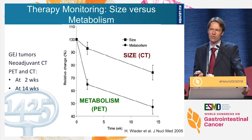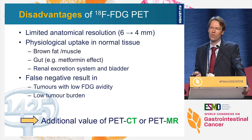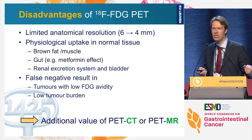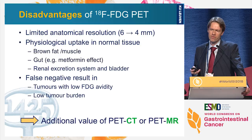There are also disadvantages to FDG PET. We have limited anatomical resolution — around 6 mm, but 4 mm on modern cameras. We can have physiological uptake in normal tissues such as brown fat or gut caused by metformin in diabetic patients. We have renal excretion to the bladder, and false negative results in tumors with low FDG avidity, such as well-differentiated HCC or neuroendocrine tumors, or patients with low tumor burden like Barrett's-surveillance adenocarcinoma.